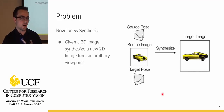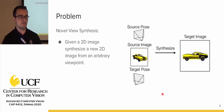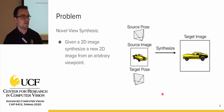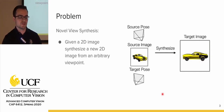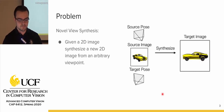The overall problem this paper addresses is Novel View Synthesis. Novel View Synthesis is basically: given a 2D image, synthesize a new 2D image from an arbitrary viewpoint. As you can see in this example, you're given a source pose, the source image, and a target pose, and the objective is to synthetically create a new target image.